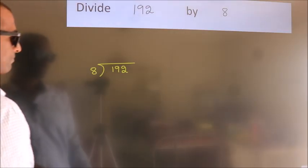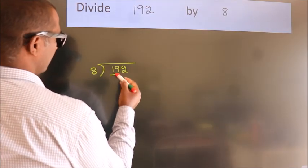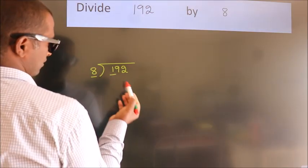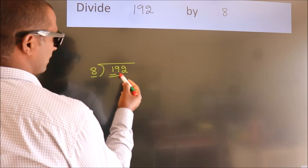Next. Here we have 1, here 8. 1 is smaller than 8, so we should take 2 numbers: 19.